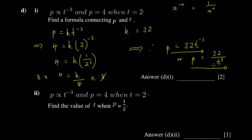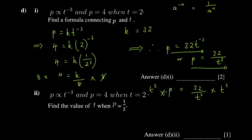This next part is a substitution question. Now that you have your formula, you're asked to find the value of t when p equals one half. From the formula, make t the subject. Multiply both sides by t cubed, and divide both sides by p in the same step. The t cubed terms and p terms cancel, giving t cubed = 32 over p.